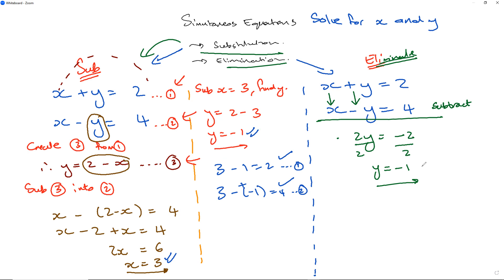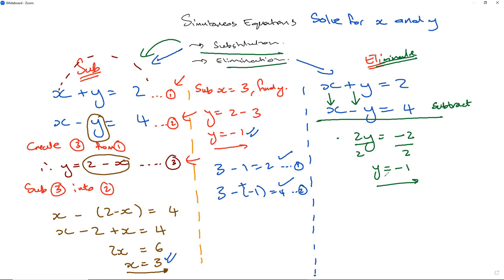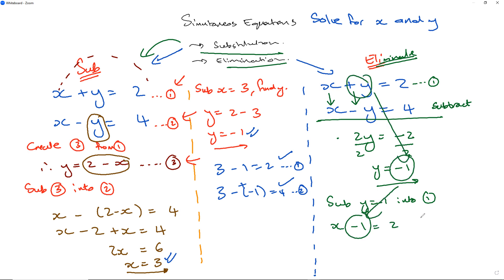I already verified y equals negative 1 from the check earlier. Alternatively, if I had added the two equations, the y terms would disappear and I'd get 2x equals 6, giving x equals 3. Instead I'll substitute y equals negative 1 into equation 1: x plus (negative 1) equals 2, so x equals 3.